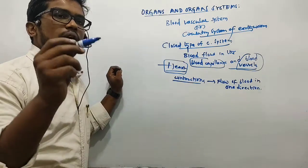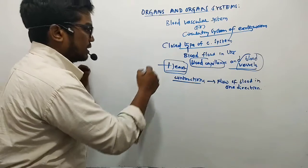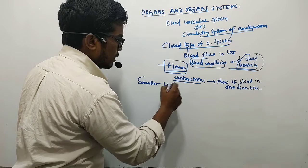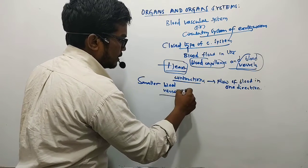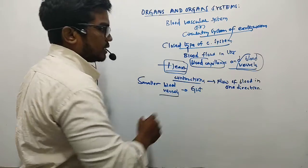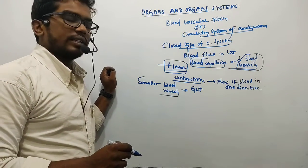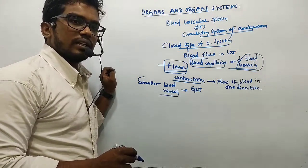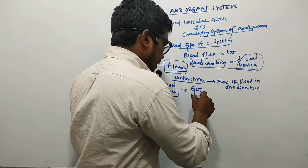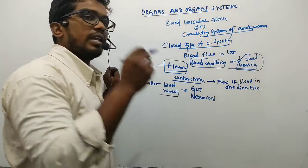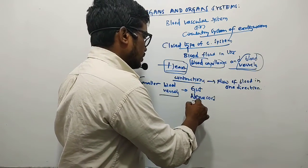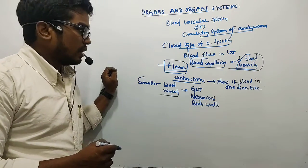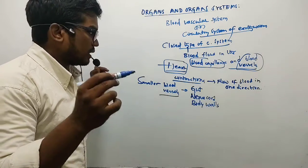Furthermore, the smaller blood vessels present in the earthworm supply blood to the gut — that is, the stomach and intestinal part of the alimentary canal — as well as to the nerve cord and the body wall.